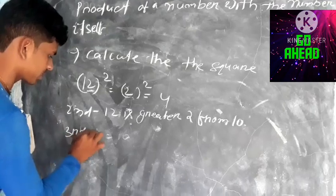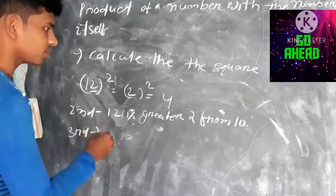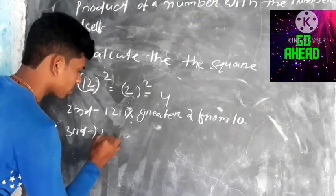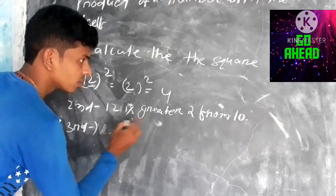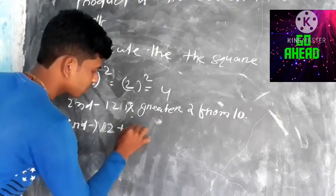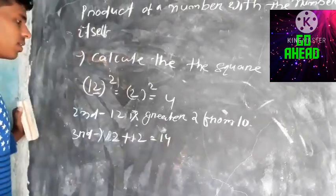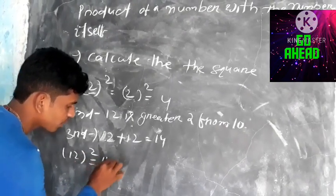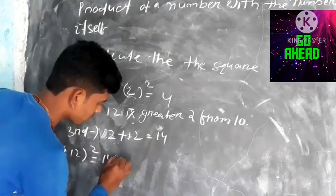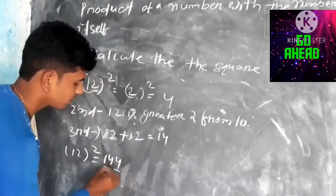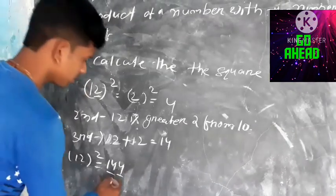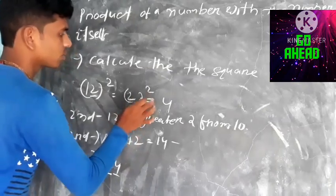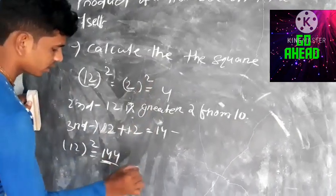Third step: add the number with the number. Add 2 to 12 — that is 14. Then we get the answer: 12² = 144. You simply add the number, and in the result you place the square of 2, which is 4, giving 144.